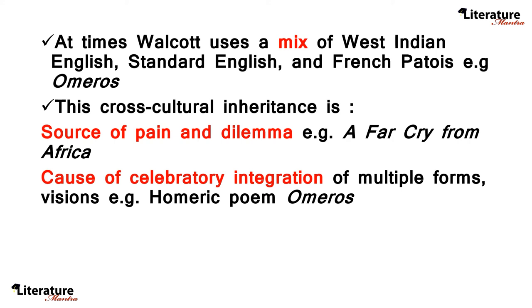This cross-cultural inheritance is both a source of pain and dilemma, as well as a cause of celebratory integration. For example, in his poem A Far Cry from Africa, this reason for pain, indecisiveness, or dilemma is visible. And in his poem Omeros, it becomes a cause of celebratory integration of multiple forms and visions.